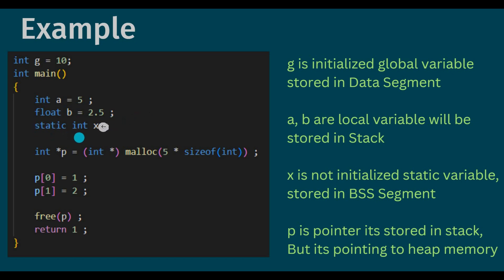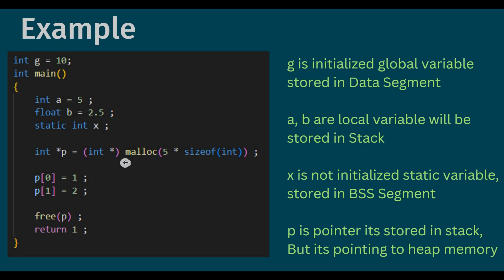Coming to the next line: int x is a static variable and it is not initialized with any value. So x will be stored in the BSS segment. By default, x will be initialized with zero. Coming to the next line: int star p. Here p is an integer pointer pointing to dynamically allocated memory. As we discussed, whatever memory is allocated using malloc and calloc will be stored in the heap. So p is a local variable — an integer pointer — pointing to an address stored on the heap. So p itself will be stored on the stack, but p is pointing to memory stored on the heap.